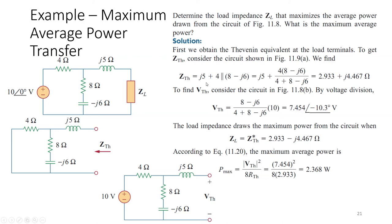Looking at an example: determine the load impedance ZL that maximizes the average power drawn from the circuit, and find that maximum average power. Our load is ZL, so we need to find the Thevenin equivalent impedance and voltage of the whole circuit. To find ZTH, we short-circuit the voltage source and look from the ZL terminals — the resistance is in parallel with the series combination of resistance and capacitance, and that result is in series with the inductor.